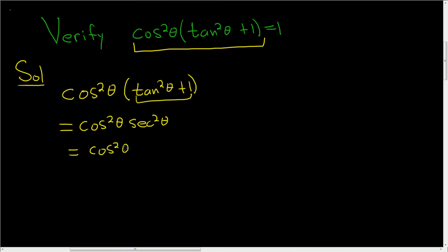Which is equal to cosine squared theta. The secant function is 1 over cosine, so this is 1 over cosine squared theta. These cancel and so you just end up with 1, which is exactly what we wanted.